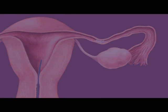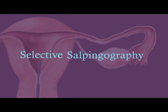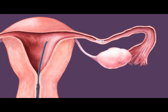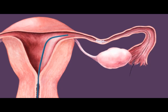When the blockage is confirmed, a selective salpingography can be performed. The catheter is pushed into the os, or opening, of the blocked tube. A thin guide wire is placed through the catheter, pushed directly through the blockage and out the opened end of the fallopian tube. A small micro-catheter is then fed through the first catheter and over the guide wire out the fallopian tube. Dye is sent through the micro-catheter.